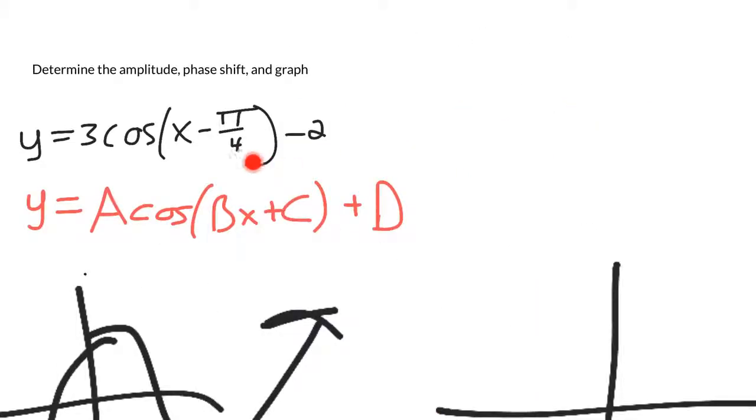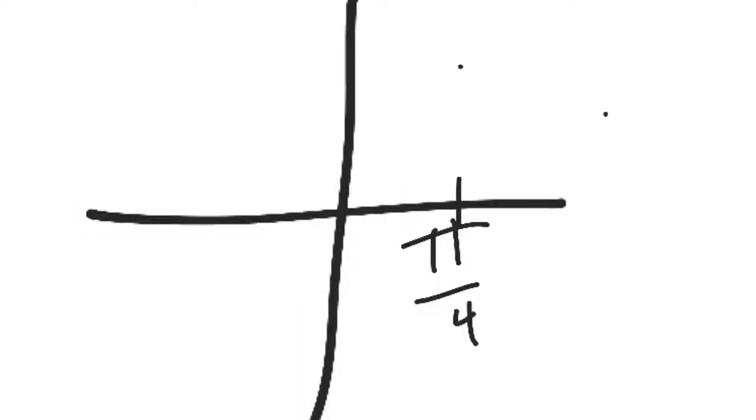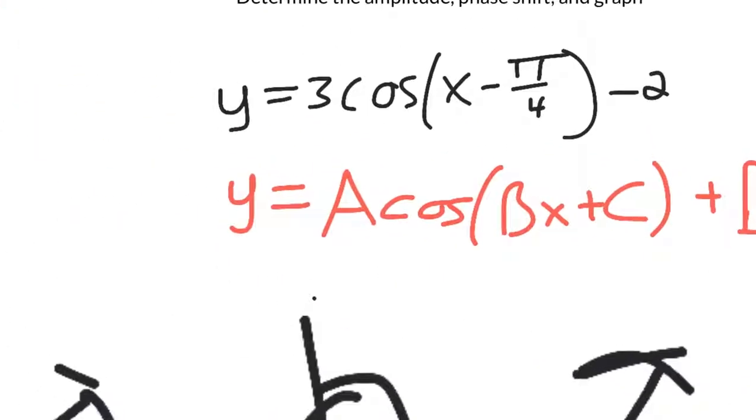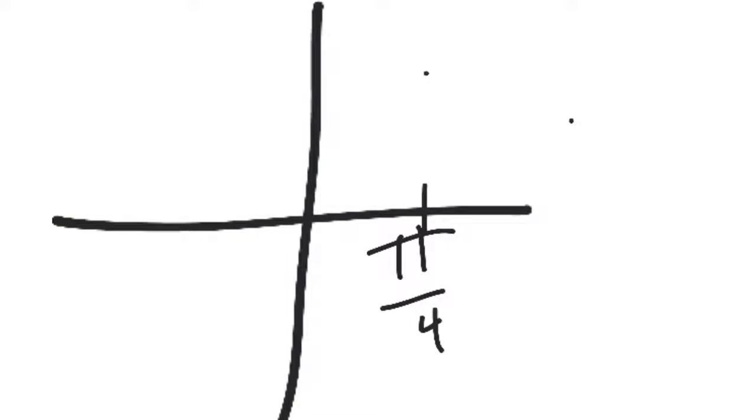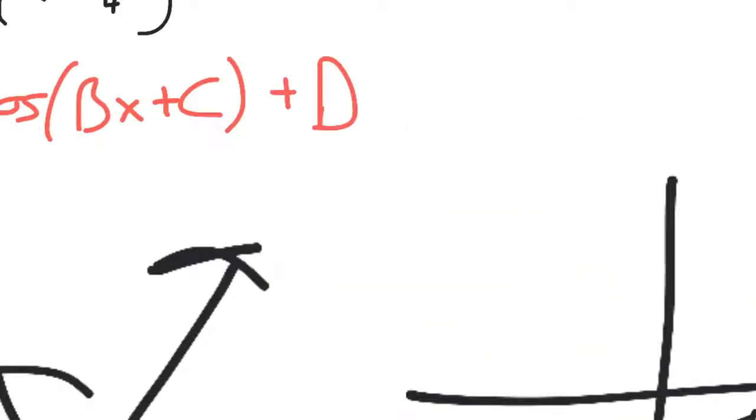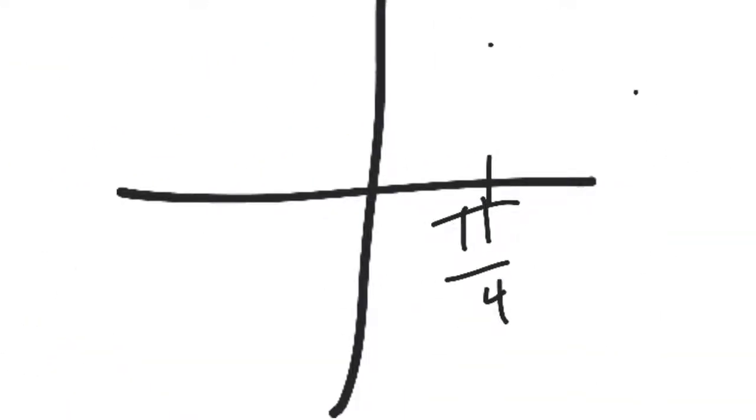Our graph goes pi over 4 spaces to the right. And so if we look to the amplitude, the amplitude of 3 means we can fall a total of 6 spaces from here. Because the amplitude means you're supposed to be 3 spaces up from the midline, 3 spaces down. But the midline has also been shifted, because minus 2 means we have a vertical shift of 2. So our midline, instead of being right here at 0, has been shifted down 2 spaces.